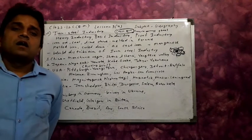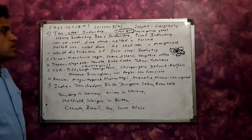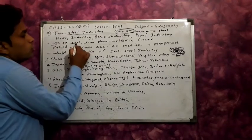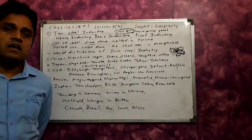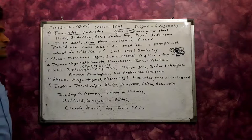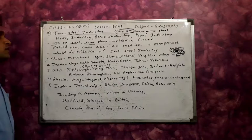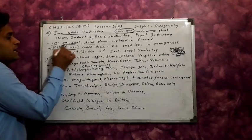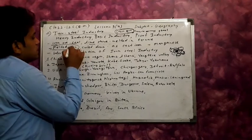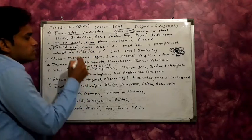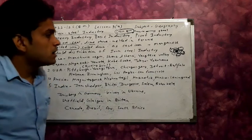The manufacturing process of iron and steel: first, iron ore, coal, and limestone are melted in a furnace — using methods such as the Bessemer and others. The melted iron is then cooled down, and this cooled metal is known as cast iron.